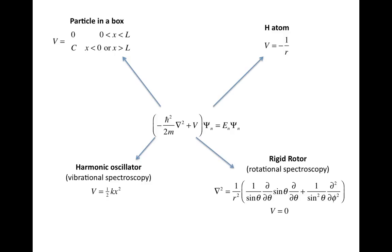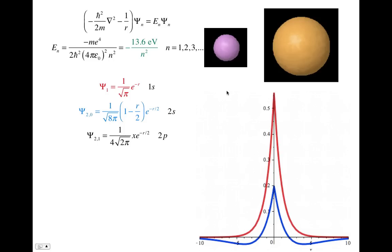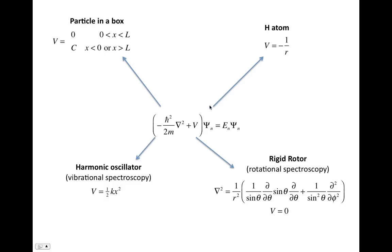But the first main lesson here is that the different Schrodinger equations for different systems are different because V is different. And so depending on how you define V, you get a solution for different systems.